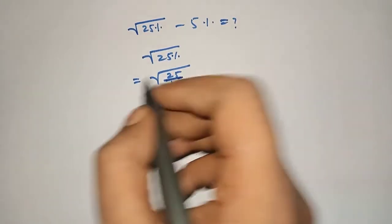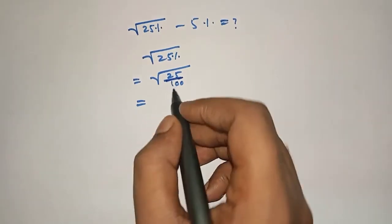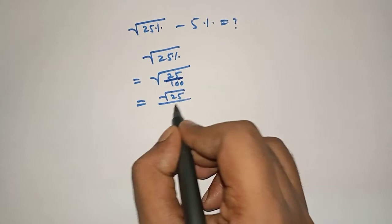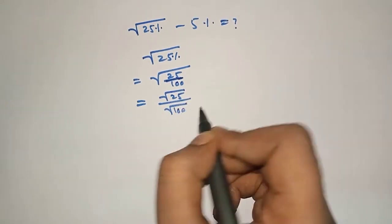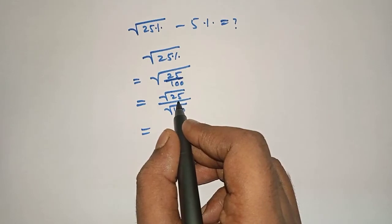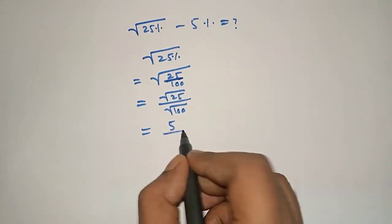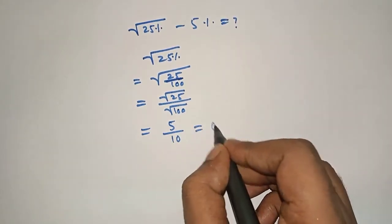Now split the square root: square root of 25 by square root of 100. Now square root of 25 is 5 and square root of 100 is 10. This is 0.5.